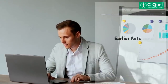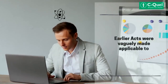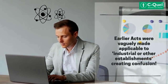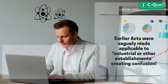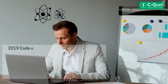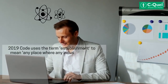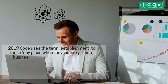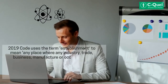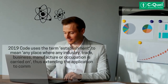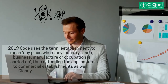Earlier acts were vaguely made applicable to industrial or other establishments, creating confusion. Now the 2019 Code uses the term 'establishment' to mean any place where any industry, trade, business, manufacture or occupation is carried on, thus extending the application to commercial establishments as well. Clearly, everyone is included in this compliance.